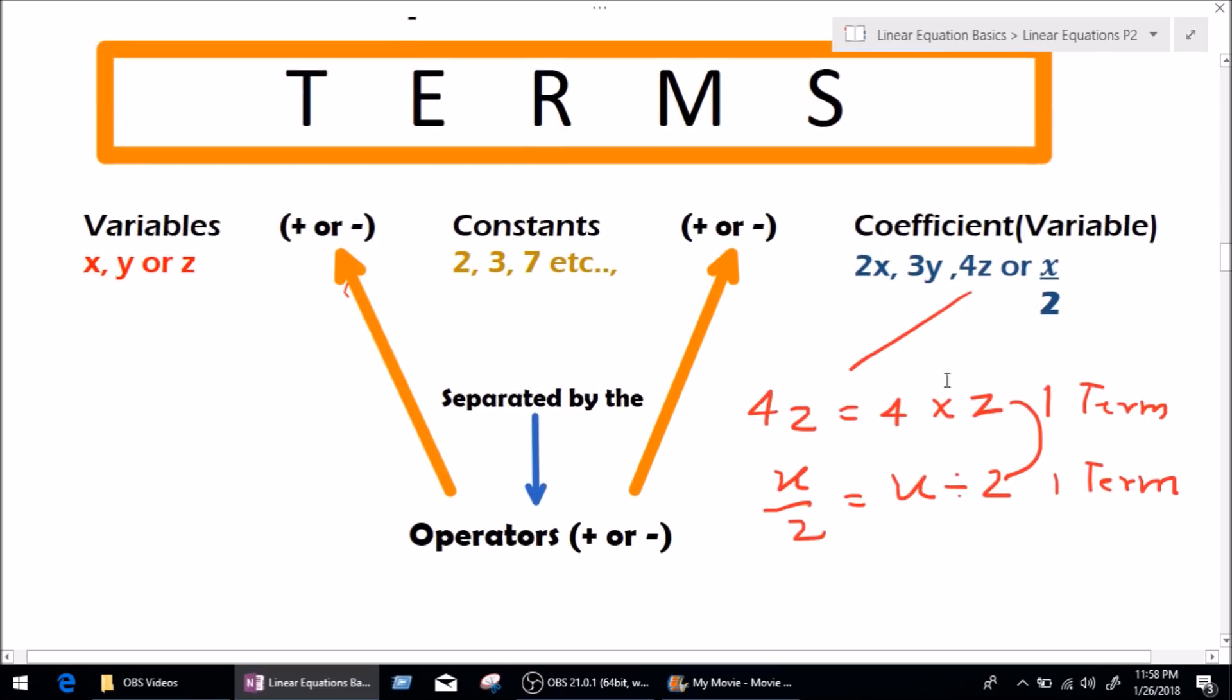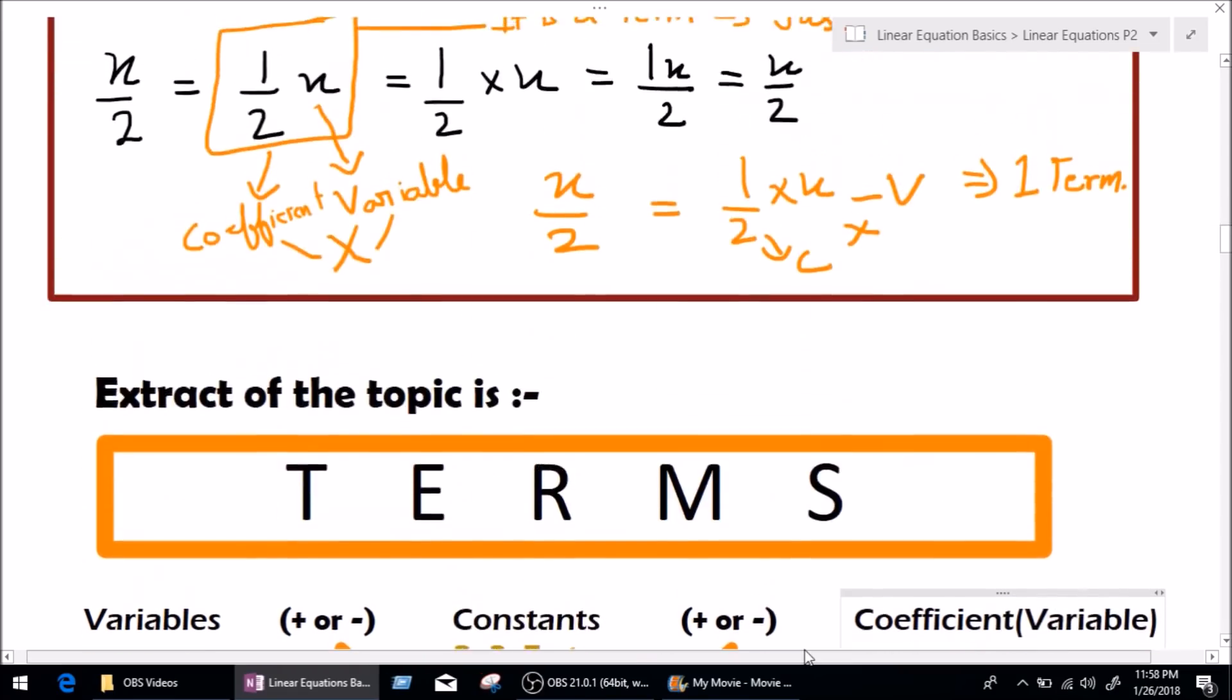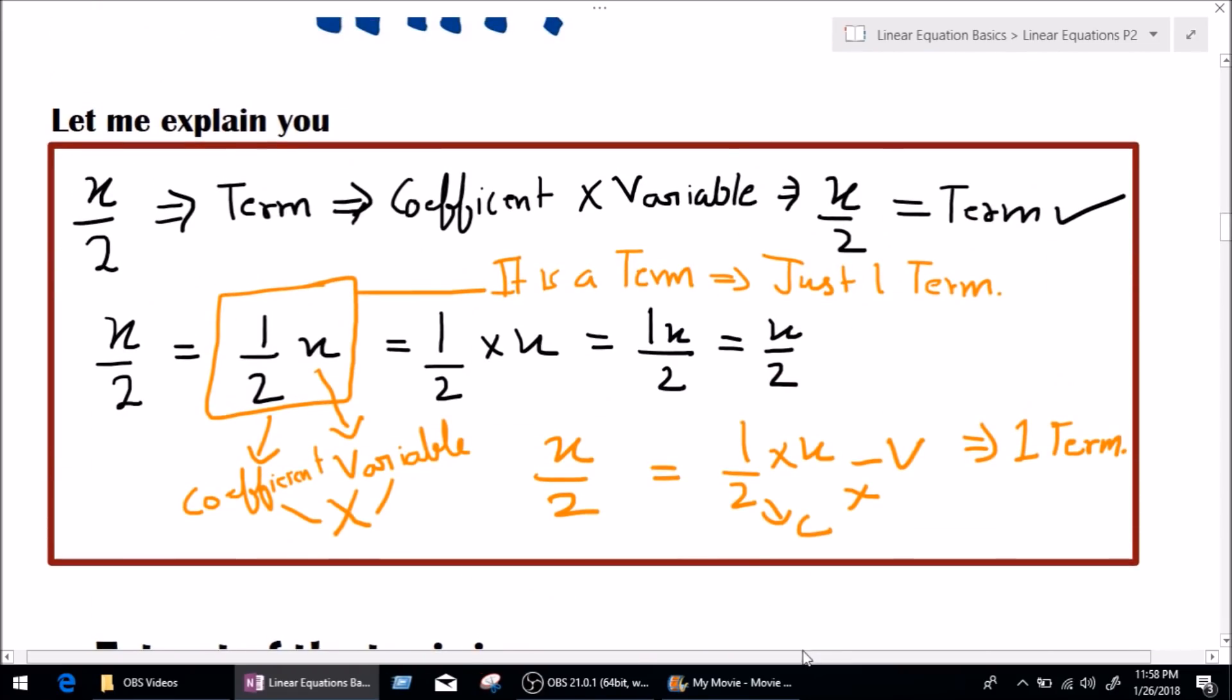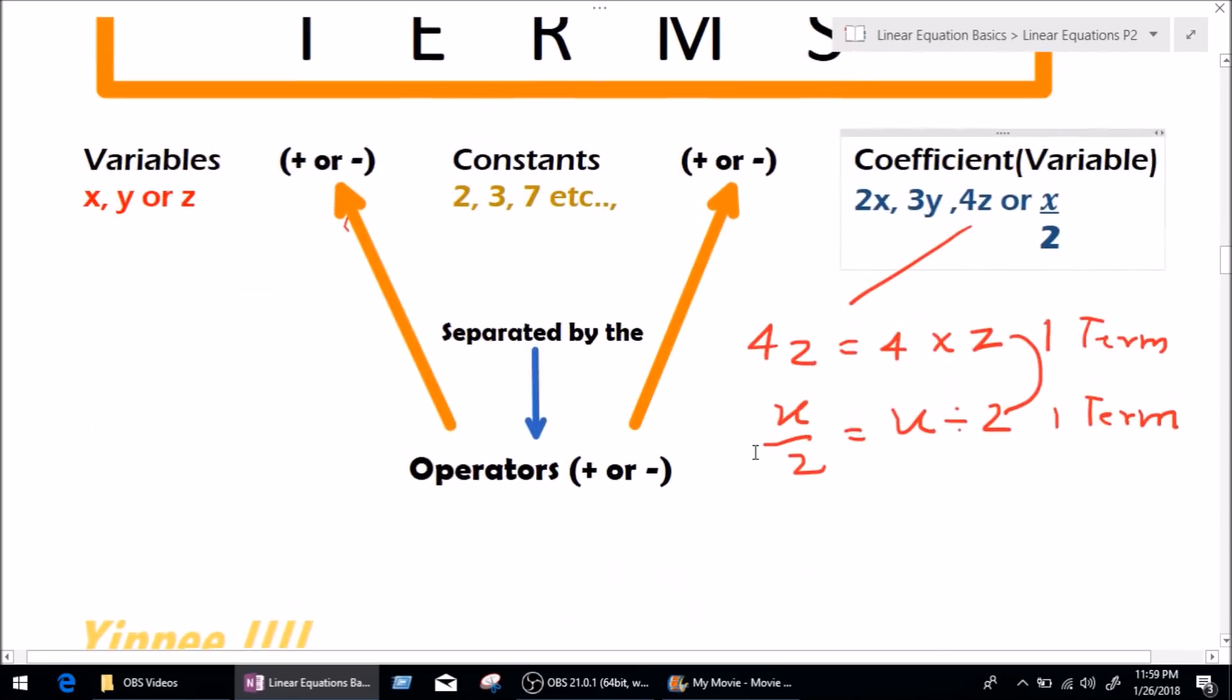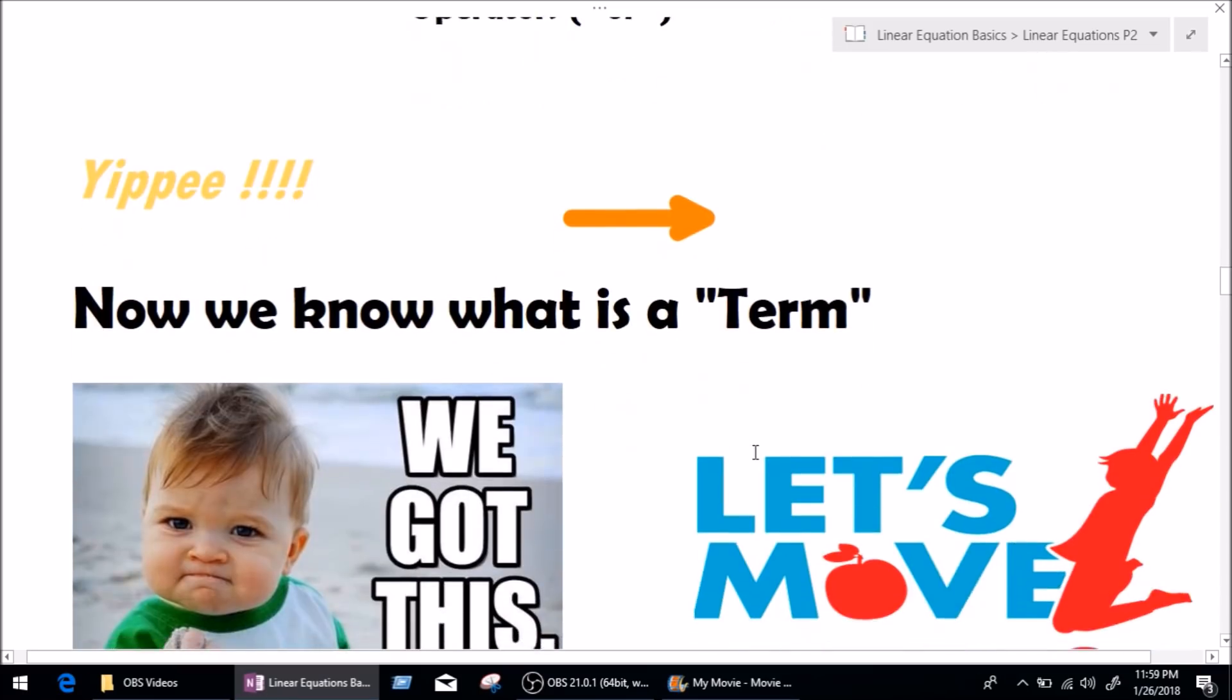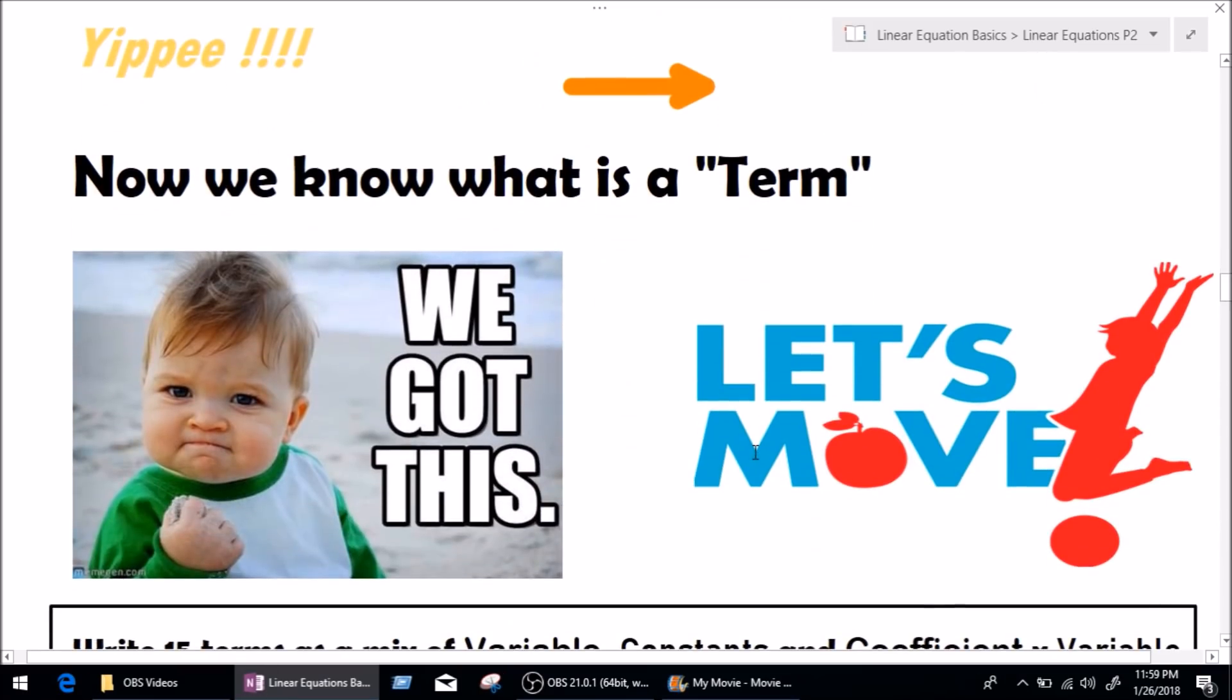Now, as you can see, 4z means 4 multiply z. But it is still one term because multiplication cannot separate a term. Same goes with x over 2 which has been explained right here. It is a term, not two different terms. So, division and multiplication cannot separate term into two terms. Keep that in mind.